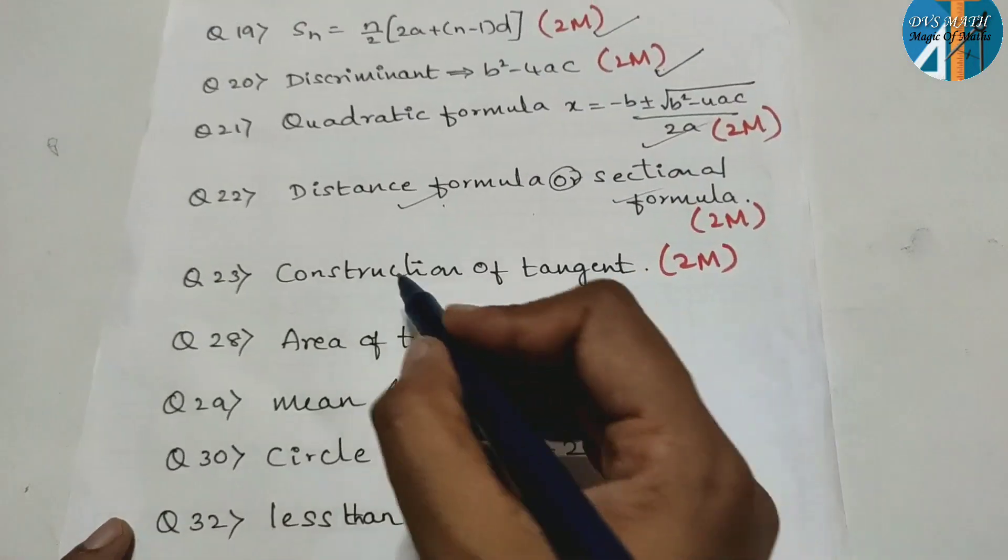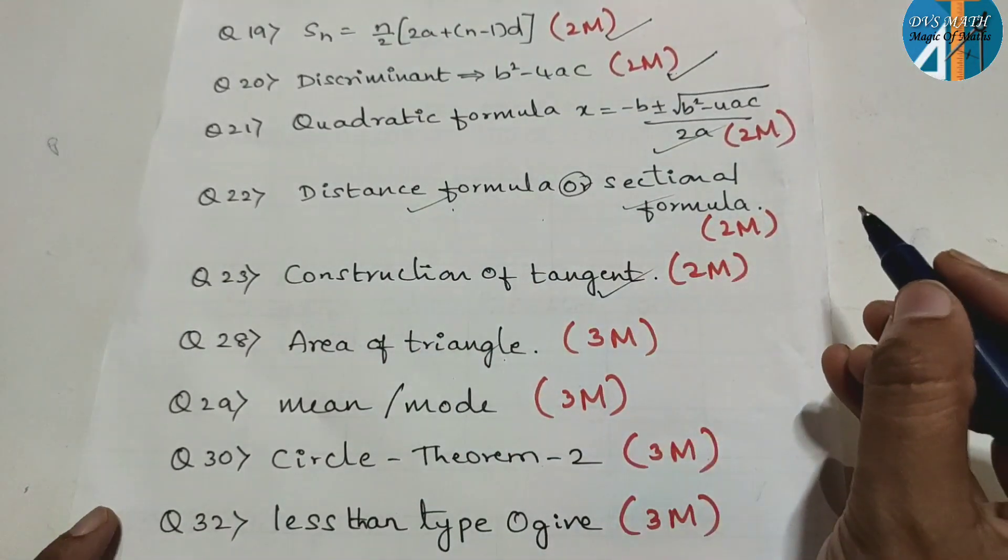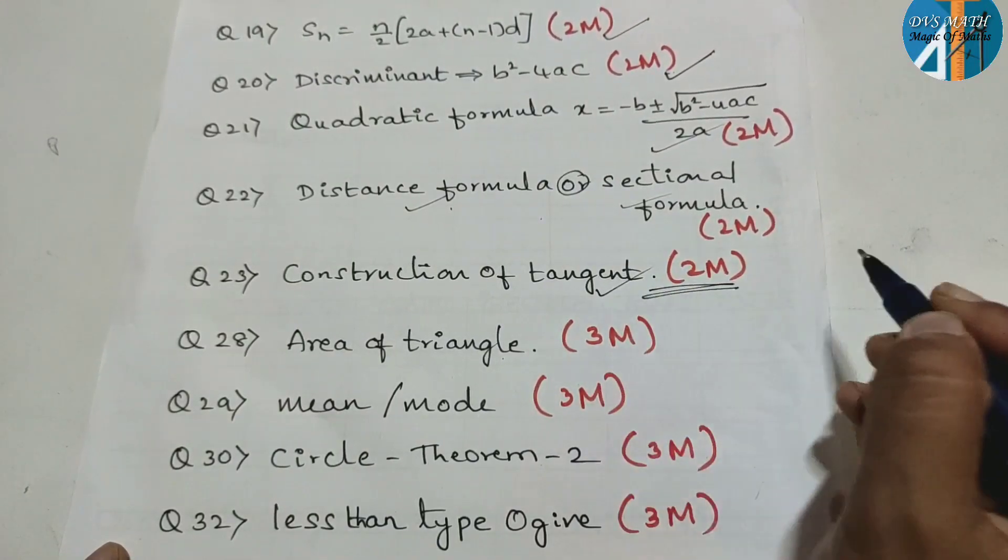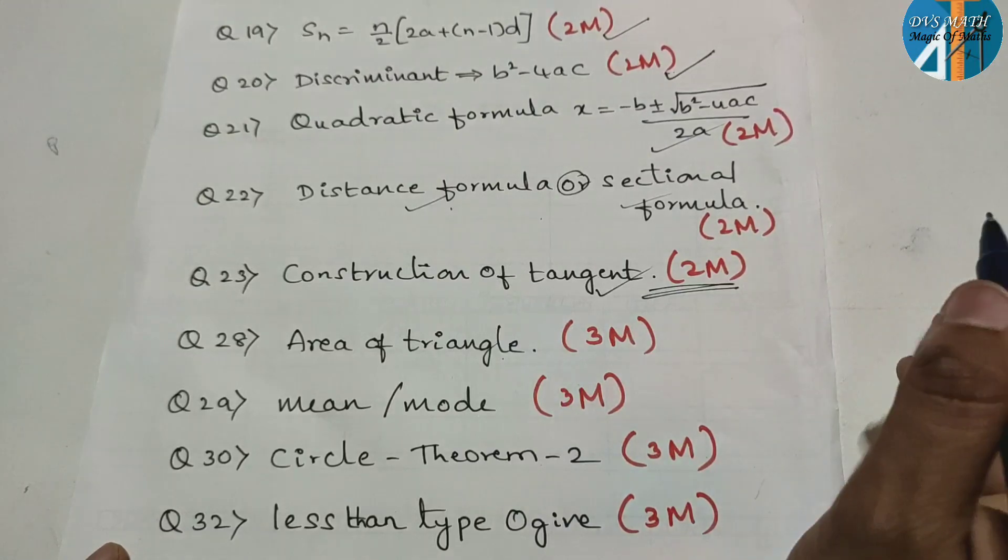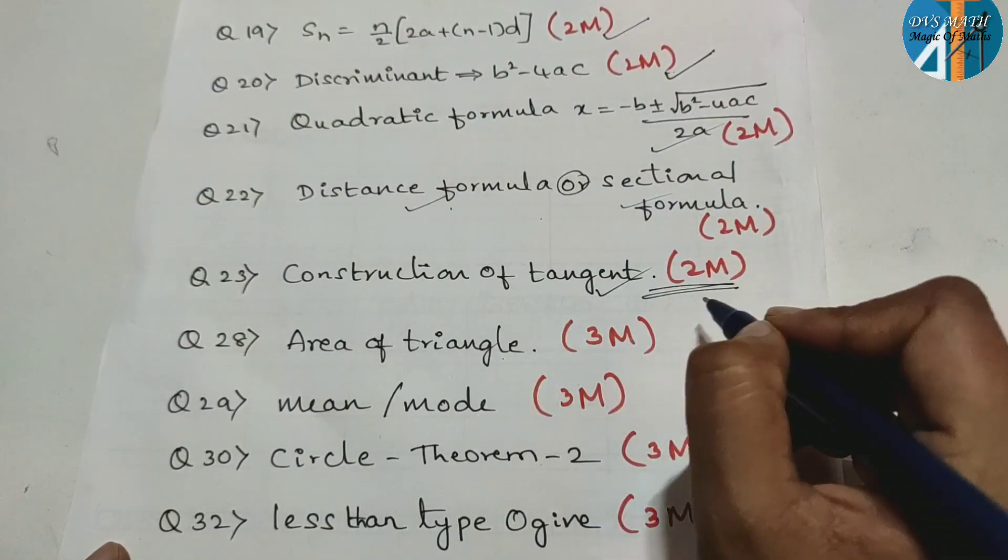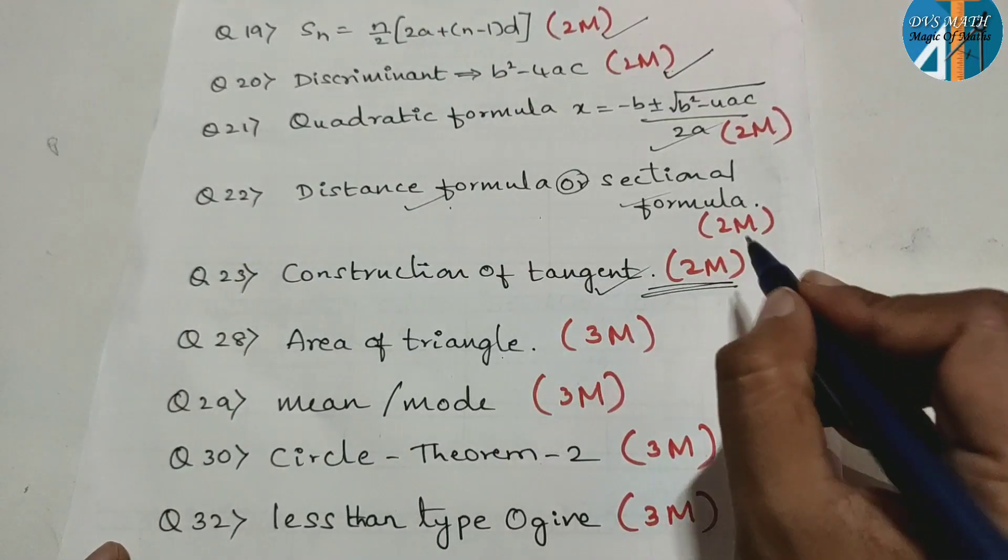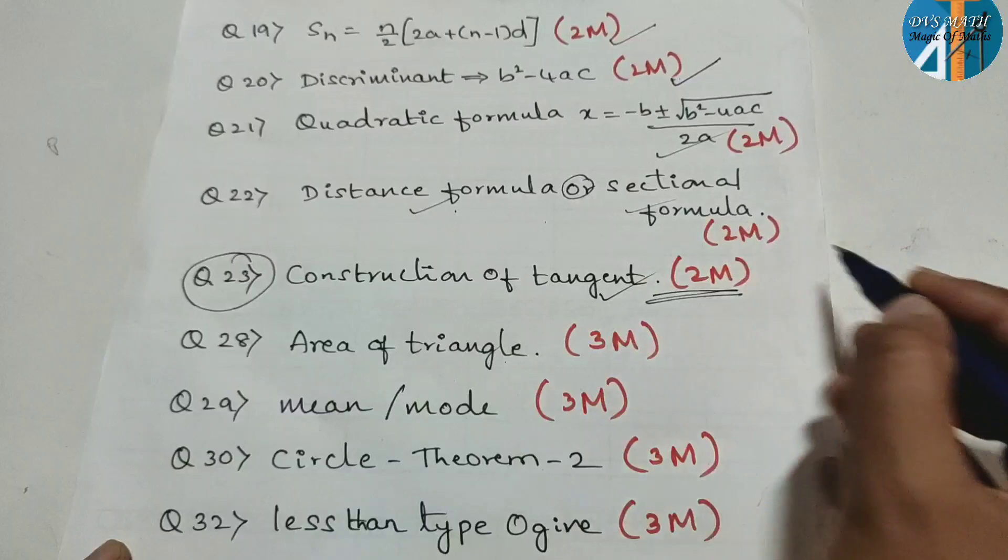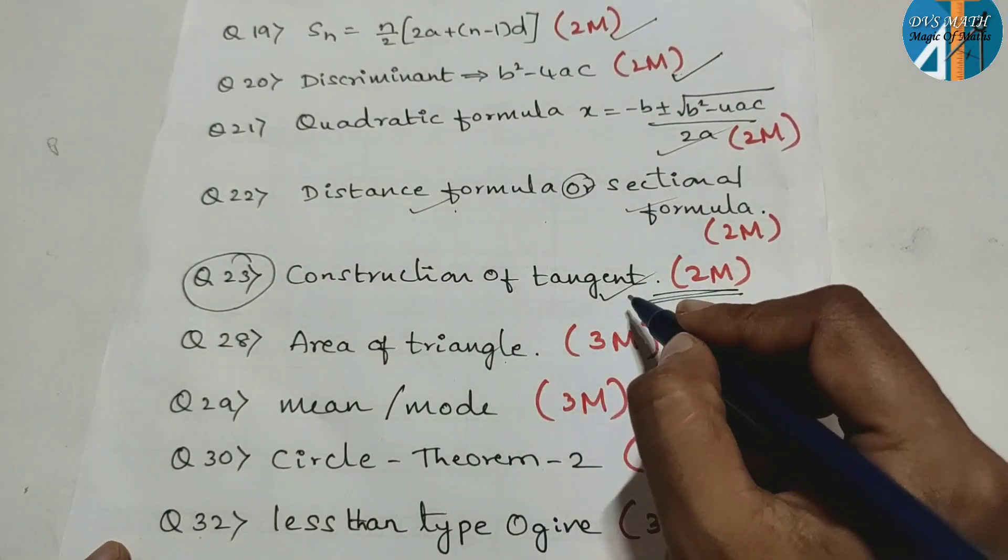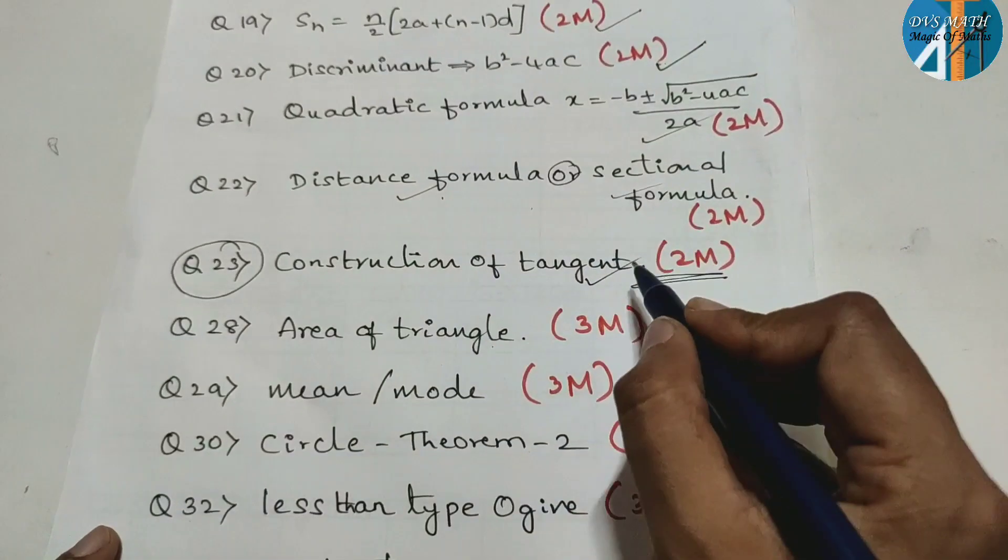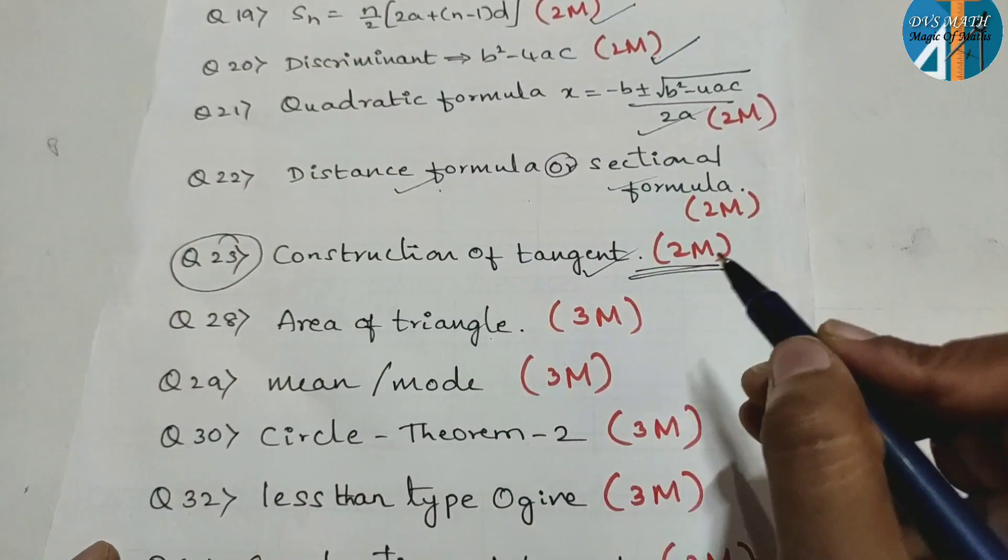Next is construction of tangent. This is the circumference question. This is the key answers. You can use this textbook. Textbook exercise question is all right. This is the question. Question paper is number 23. It is different. This is the chance. This is the question. You can refer.